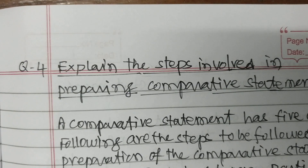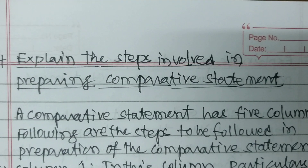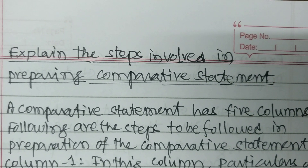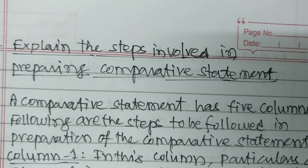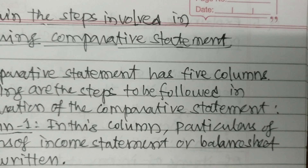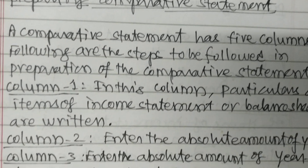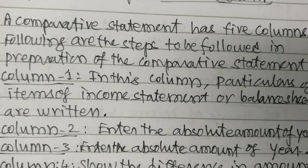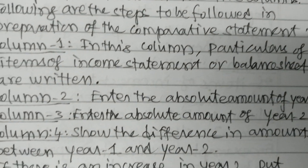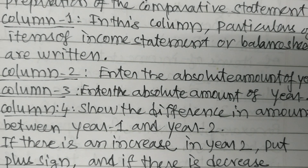Question 4: Explain the steps involved in preparing the comparative statement. A comparative statement has five columns. Following are the steps to be followed. Column 1: Particulars of items of income statement or balance sheet are written. Column 2: Enter the absolute amount of Year 1. Column 3: Enter the absolute amount of Year 2. Column 4: Show the difference in amounts between Year 1 and Year 2.